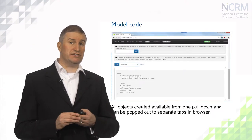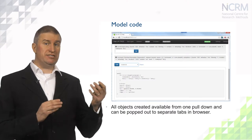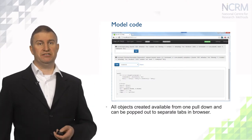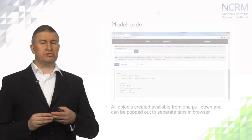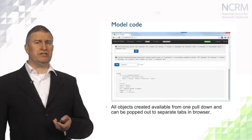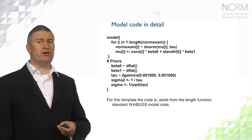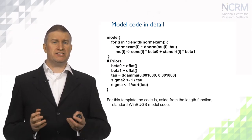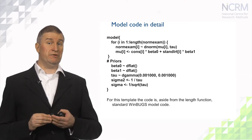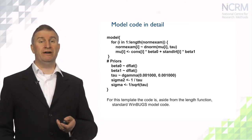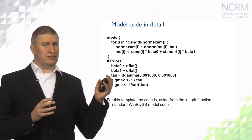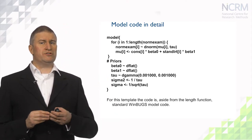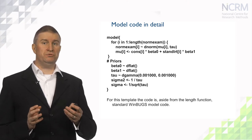If we return to the pull-down list we can choose another object. Here we see the model code that is used by the algebra system. We can also pop out objects by clicking on the pop-out button and then they will appear in separate tabs in your web browser, so several objects can be viewed at once. The model code that the template has constructed is written in a language originally developed by the team of software developers who developed the WinBUGS package. It has slightly small differences, like the length function, and here the code specifies a regression model along with some diffuse prior distributions.